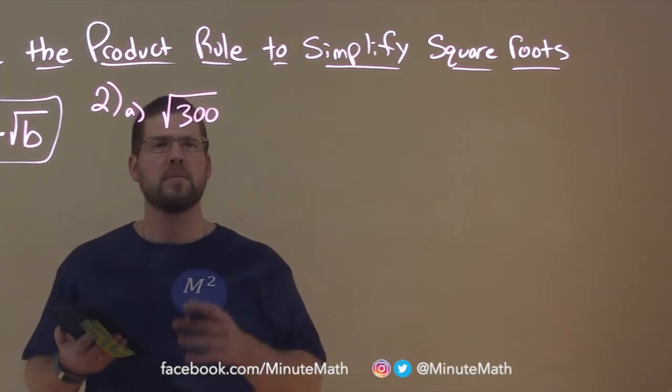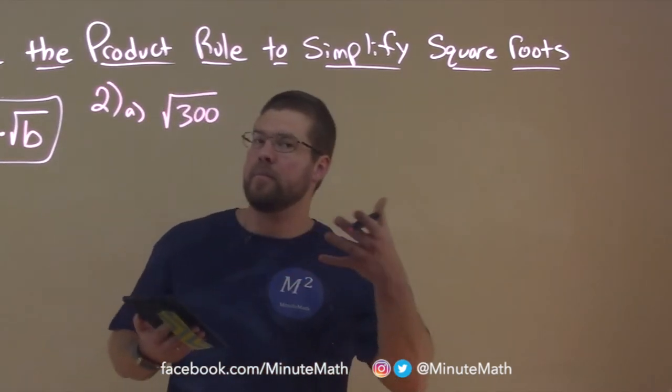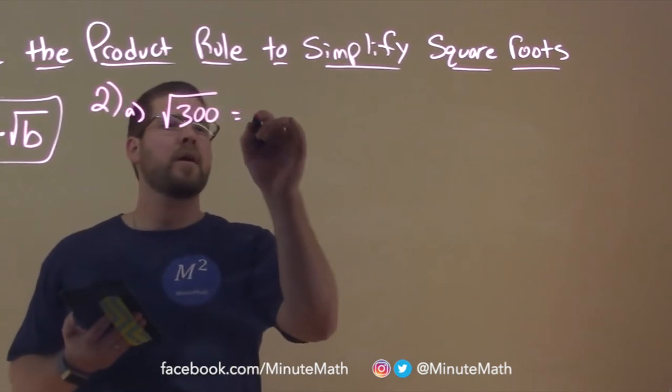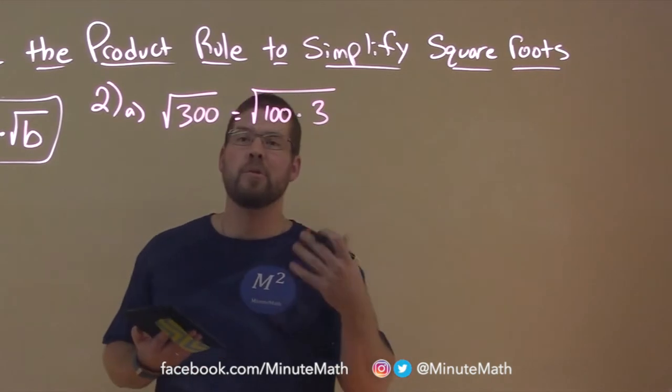Well, what do we know about 300? Well, 300 is really 100 times 3. And this is where it kind of comes in. 100 times 3 is equal to 300.